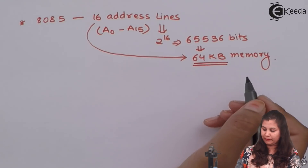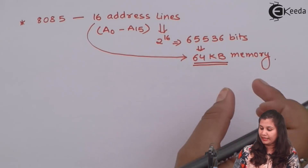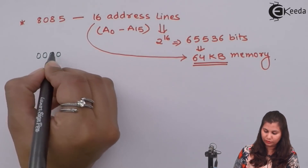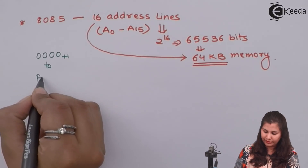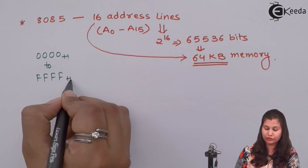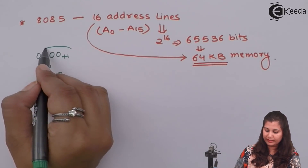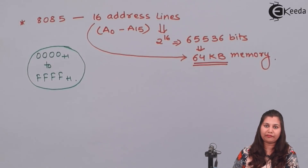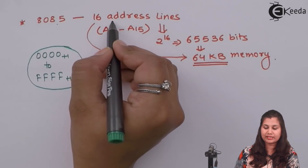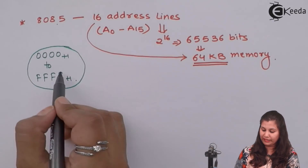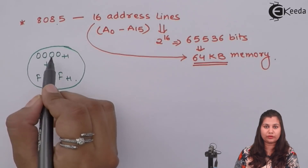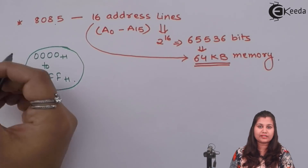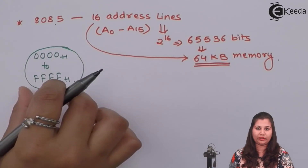So this 64 kilobytes is the maximum limit of memory that can be interfaced with the 8085 microprocessor. If we mark the addresses, they will start from 0000H to FFFFH. These are the addresses of the memory locations which can be addressed by the 8085 microprocessor because it has 16 address lines, giving 2 raised to the power 16 address range.